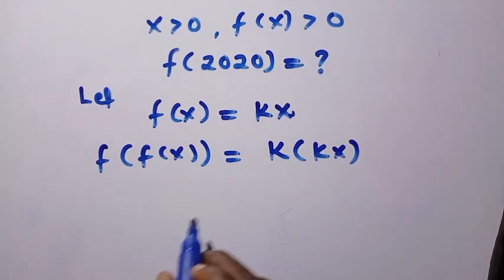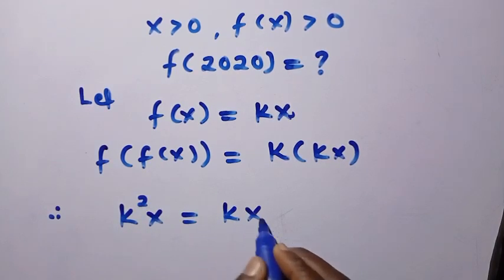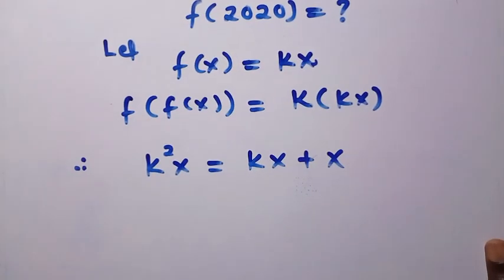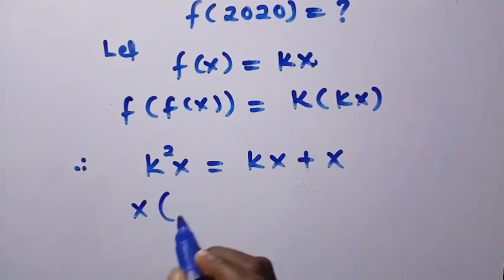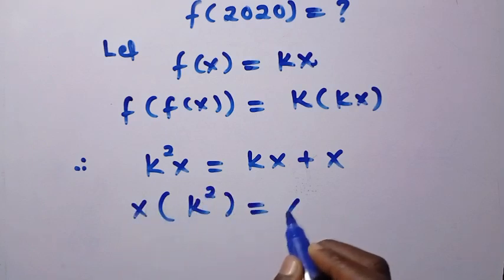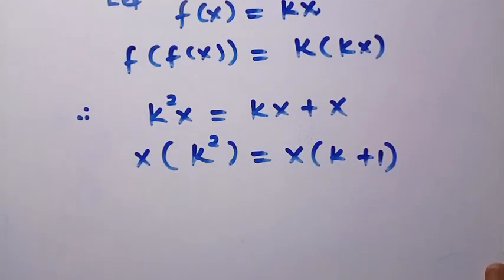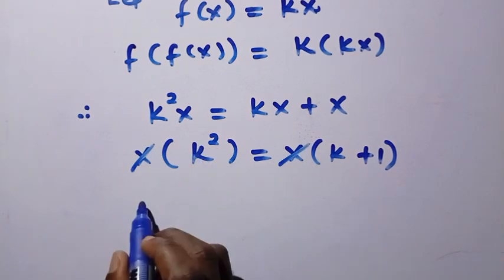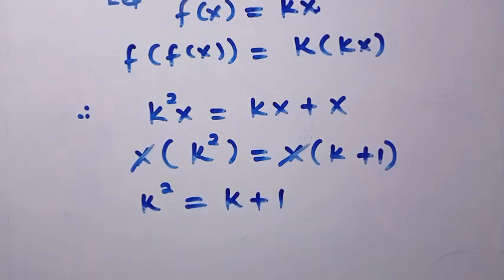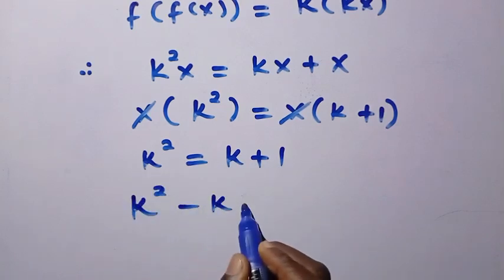Having this, we replace everything and get k² x = kx + x. We then factor out x on the right side, giving k²x = x(k + 1). Canceling x from both sides, we have k² = k + 1.